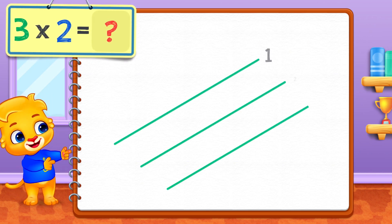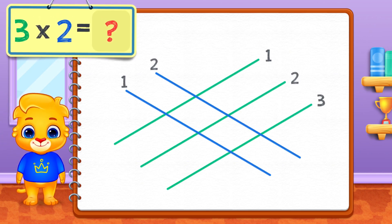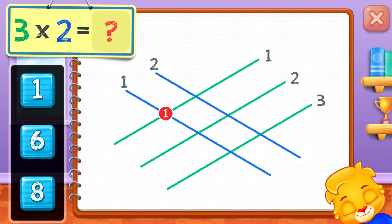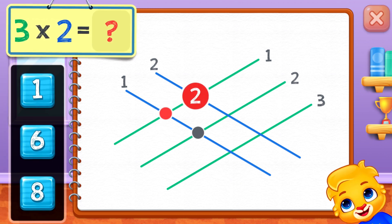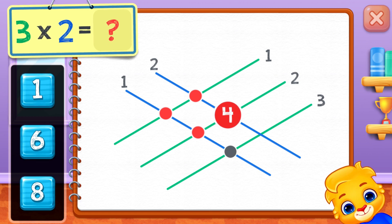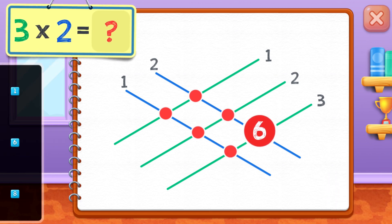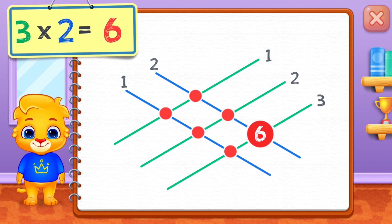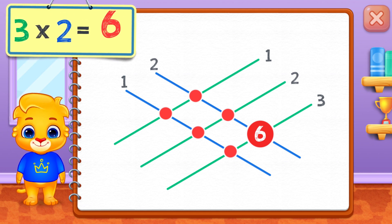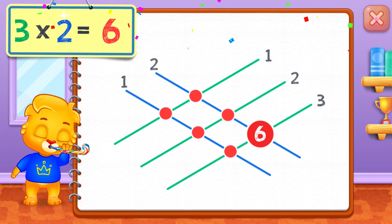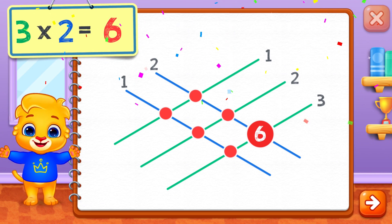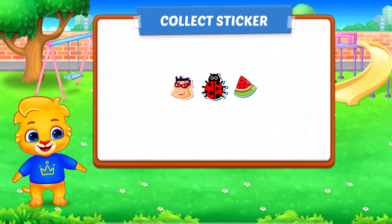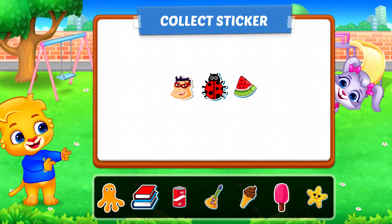Three times two equals — one, two, three, four, five, six. Three times two equals six. Pick a sticker!